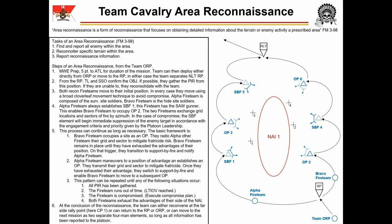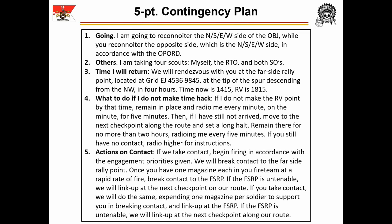The five-point from the team leader to the ATL will sound like this: 'I'm going to reconnoiter the north side of the objective while you reconnoiter the south side in accordance with the op board. I am taking four scouts — myself, the RTO, and both SOs. We will rendezvous with you at the far side rally point, located at grid Echo Juliet 45369845, at the tip of the spur descending from the northwest, in four hours. Time now is 14:15, RV is 18:15. If I do not make the RV by that time, remain in place and radio me every minute on the minute for five minutes. Then, if I still have not arrived, move to the next checkpoint along the route and set a long haul, remaining there for no more than two hours, radioing me every five minutes. If you still have no contact, radio higher for instructions.'